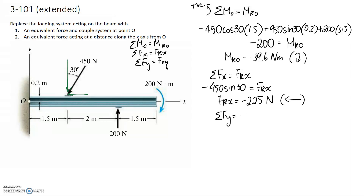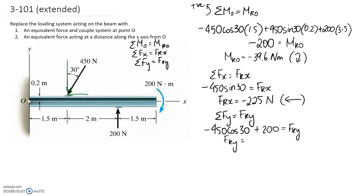For the resultant in the y direction: from the 450 newton force we have a vertical component pointing downwards, so it's negative — the cosine component. The 200 newton force is pointing upwards, so it's plus 200. The moment does not enter the force equation. Typing this into a calculator gives an answer of negative 189.7 newtons — the negative telling us it's pointing downwards.